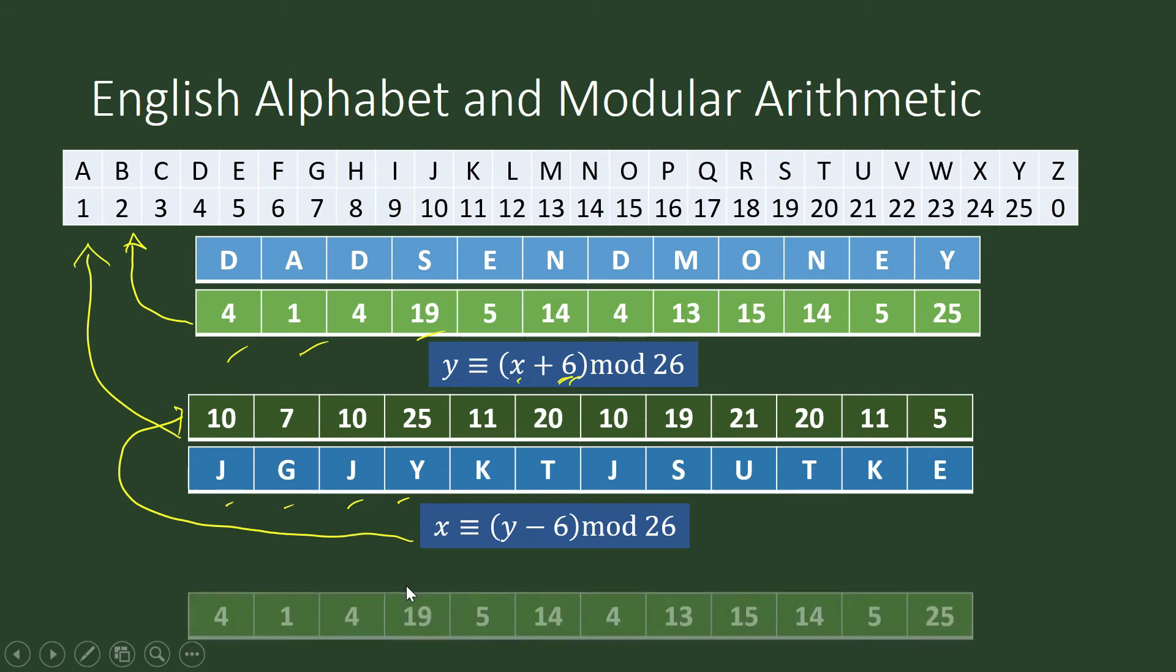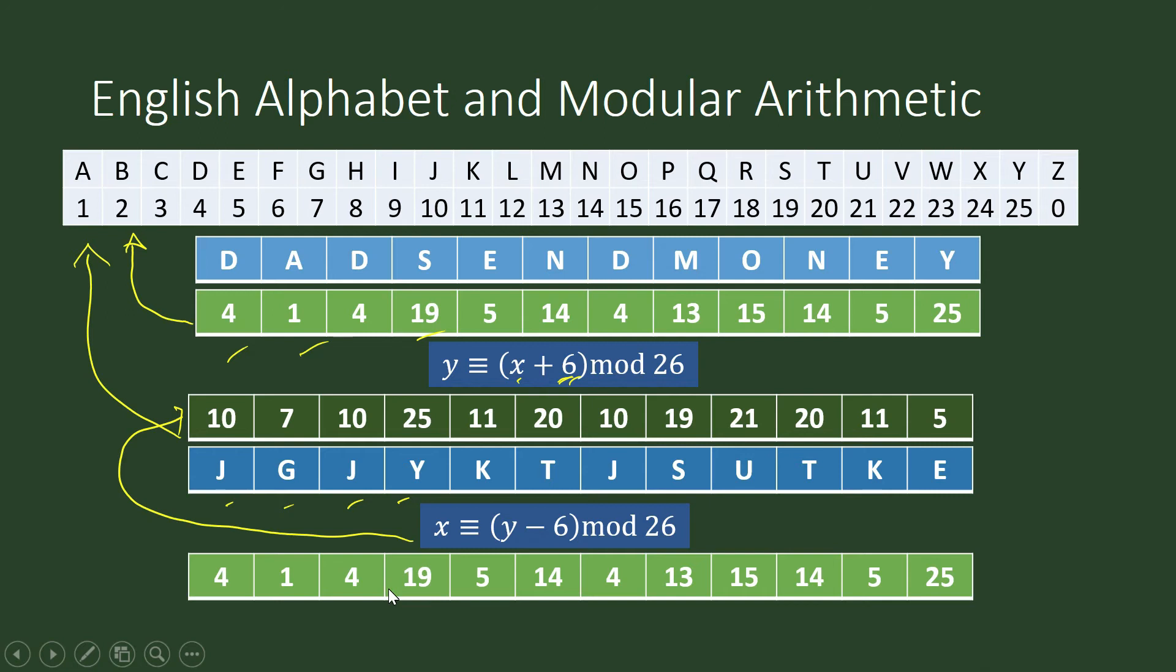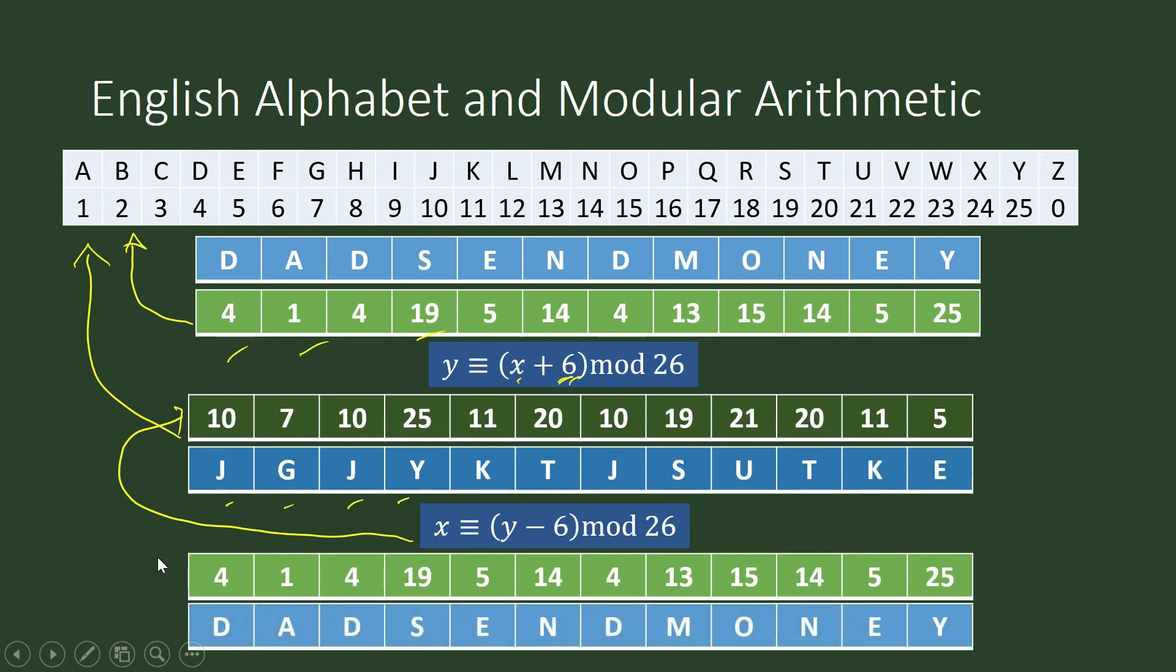And then after applying the decryption key, the output is this one. And this string of integers is equivalent to this message: Dad, send money. And your father would know what to do. He will send you money.